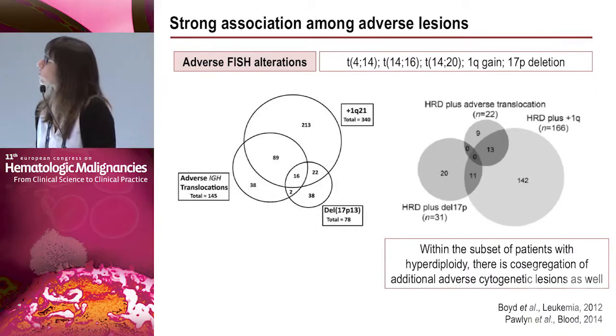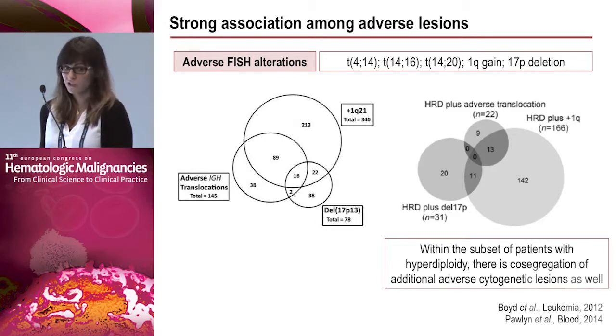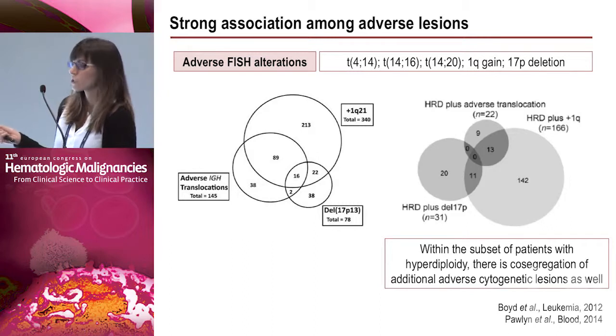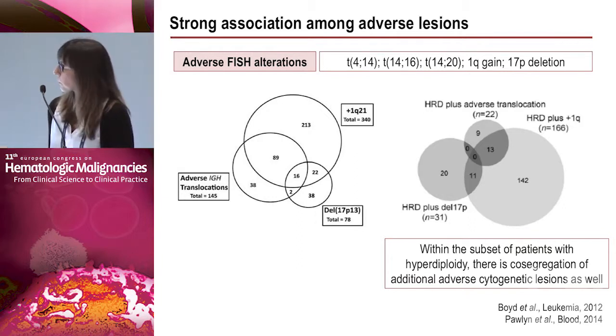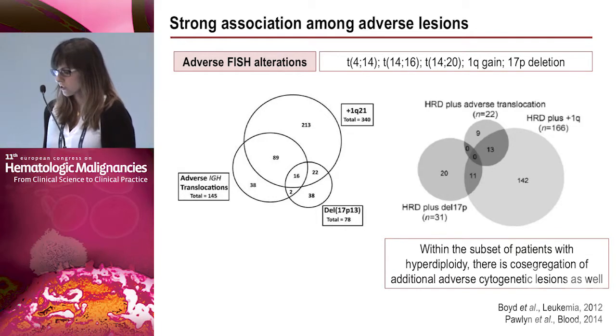Based on this data, they established optimal cutoffs with prognostic value: 10% for 13q deletion, 50% for 17p deletion, and 20% for 1q21 amplification. There is a strong association among adverse lesions — t(4;14), t(14;16), t(14;20), 1q gain, and 17p deletion. A study published in Blood last year showed that this strong association of adverse lesions is also present in the hyperdiploid subset of patients.